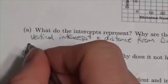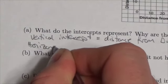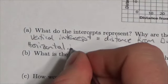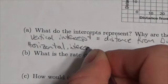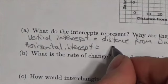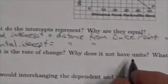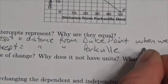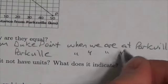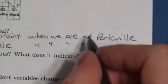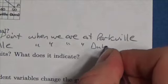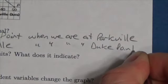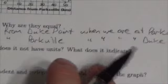Now let's take a look at the other intercept. The horizontal intercept is also 50. So we'll say it like this: our horizontal intercept represents the distance from Parksville when we are at Duke Point.